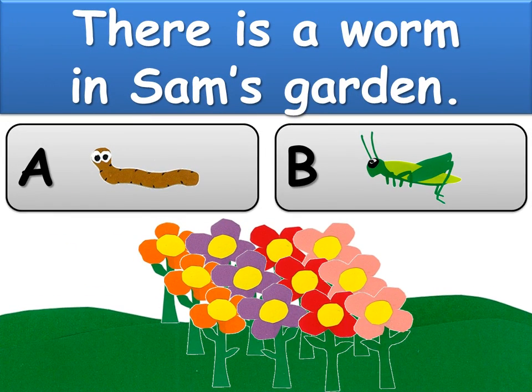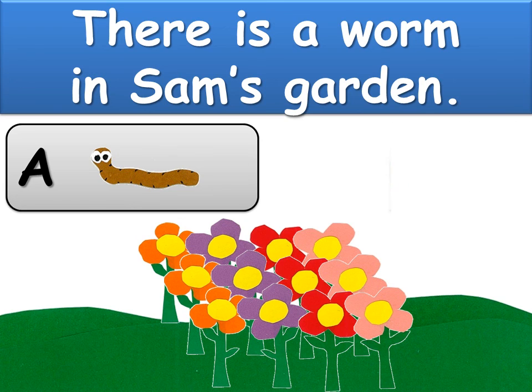There is a worm in Sam's garden. Is the answer A or B? The answer is A.